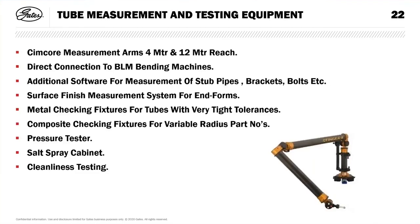The measurement arms range from four metres to twelve metres in length. If the tube is over that for some reason, you can stop the program halfway through, move the measuring machine physically, and then carry on where you left off. We have surface finish measurements for terminations and flares. We can have metal checking fixtures for tubes with very tight tolerances when required. For variable radius we use composite checking fixtures because it's much easier than trying to measure with a measuring arm. We also do pressure testing, salt spray testing, and cleanliness testing.